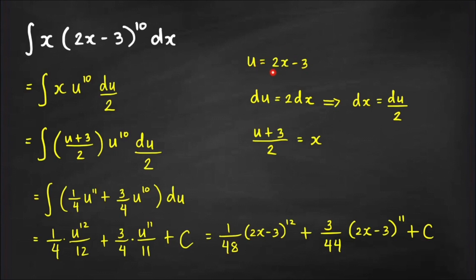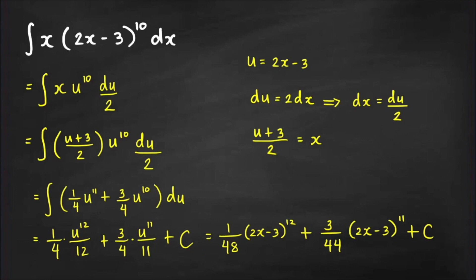Substituting x = (u+3)/2 into the integral, we get an integrand of (1/4)u^11 + (3/4)u^10, which is a polynomial and easy to integrate by the power rule. This gives (1/4)·u^12/12 + (3/4)·u^11/11 + C. Writing back in terms of x: (1/48)(2x−3)^12 + (3/44)(2x−3)^11 + C.